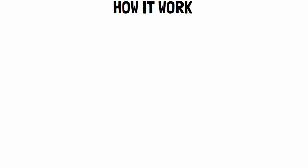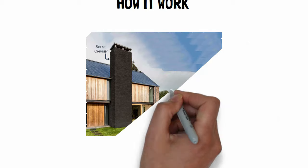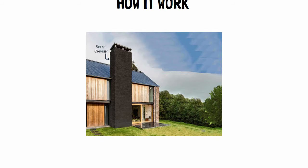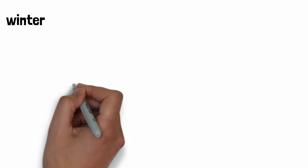The solar chimney works on the same principle. First, the chimney is coated with black material to absorb maximum sunlight. In winter, this is used for heating the building.